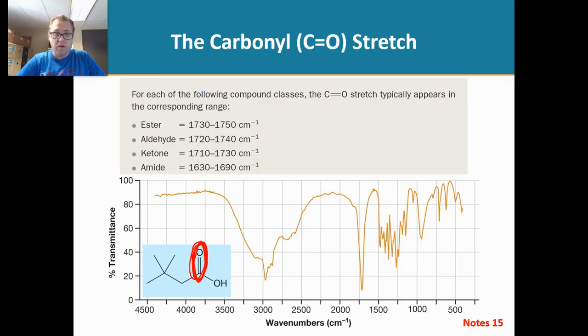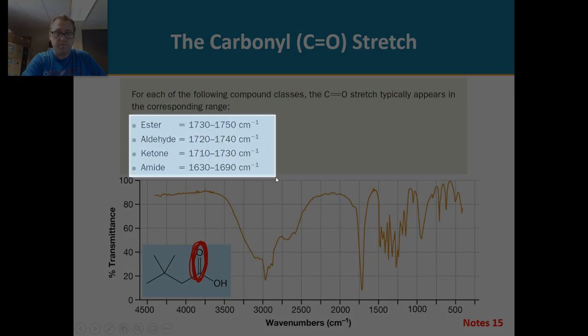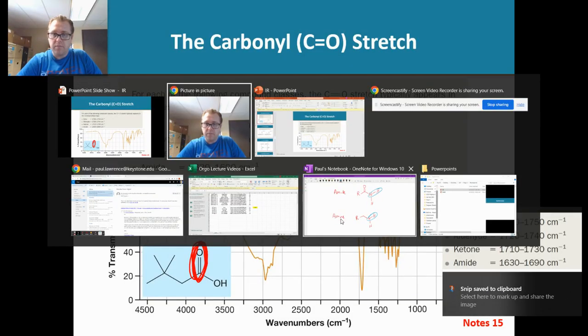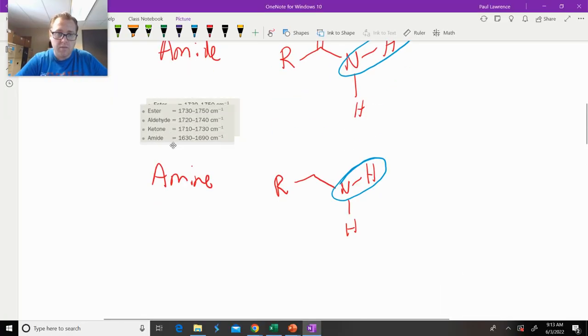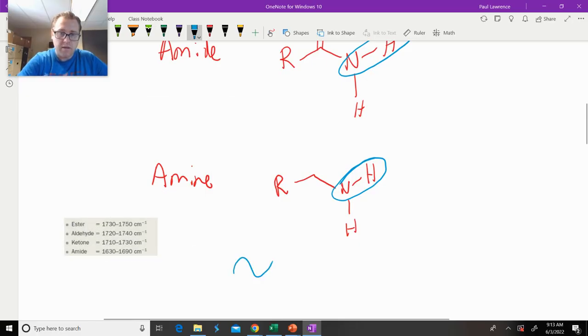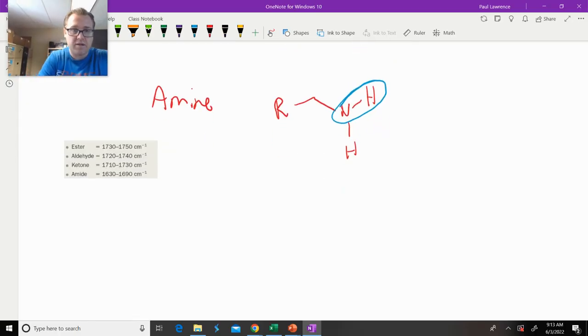So we will go to the whiteboard. Okay, so what we have first is an ester. And the generic form of an ester looks like this. That is an ester.